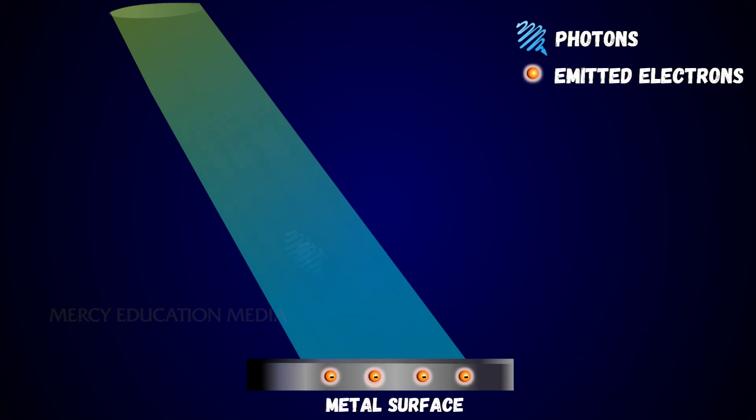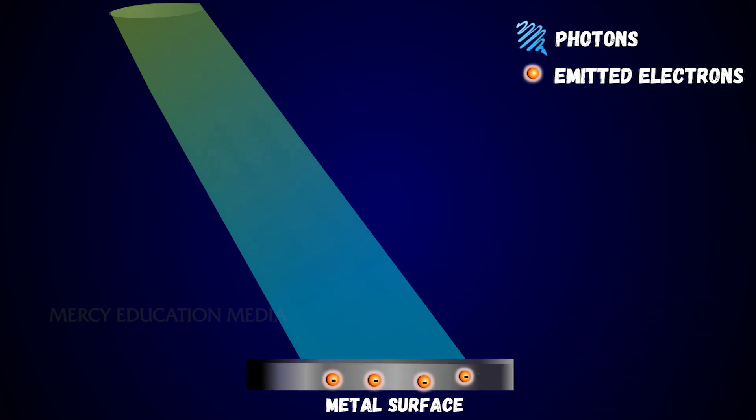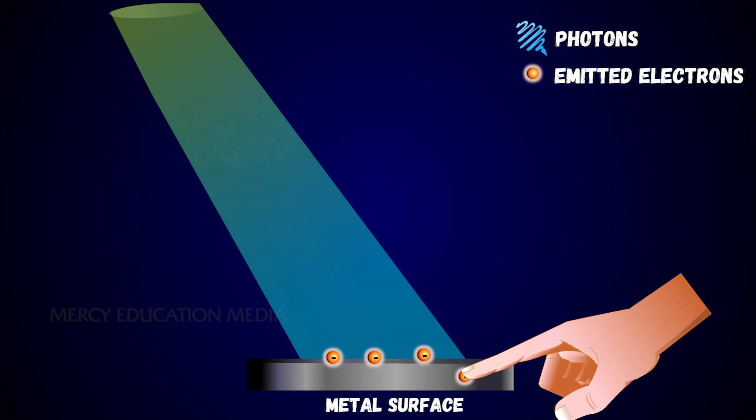When a photon of energy hν is incident on a metal surface, its energy is used up in two ways. A part of the energy of the photon is used in extracting the electron from the surface of the metal, since the electrons in the metal are bound to the nucleus.